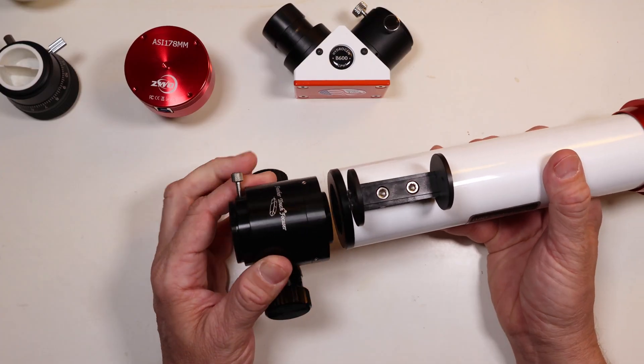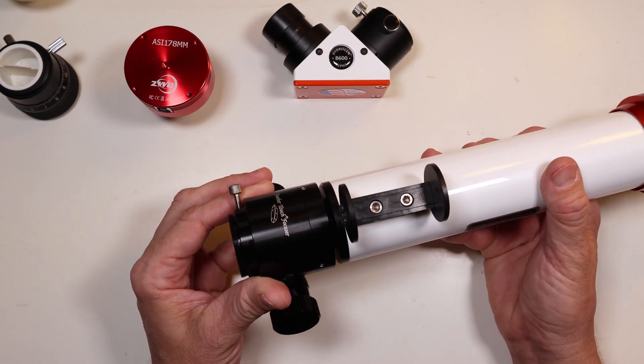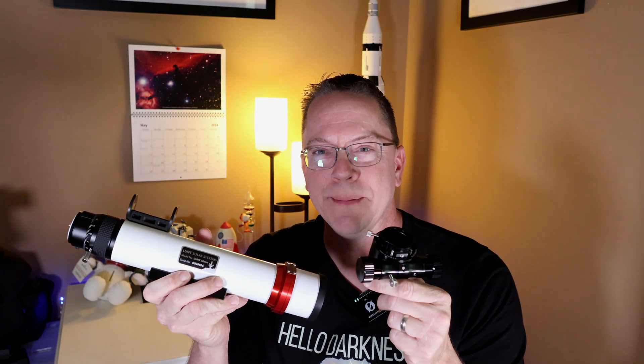Trying to figure out how to install your Starlight Instruments Feather Touch Focuser on your Lunt 40mm Dedicated Hydrogen Alpha Solar Telescope? Let me show you how I did it.